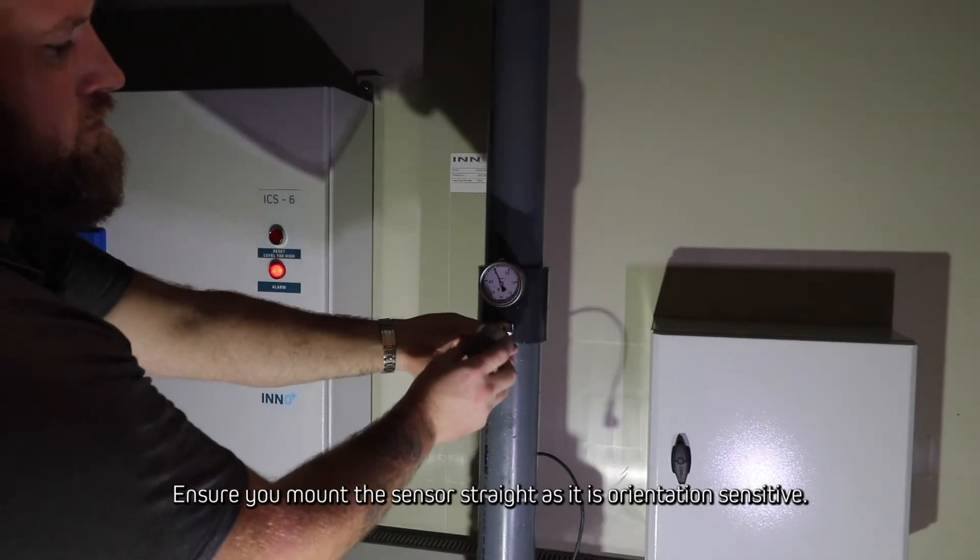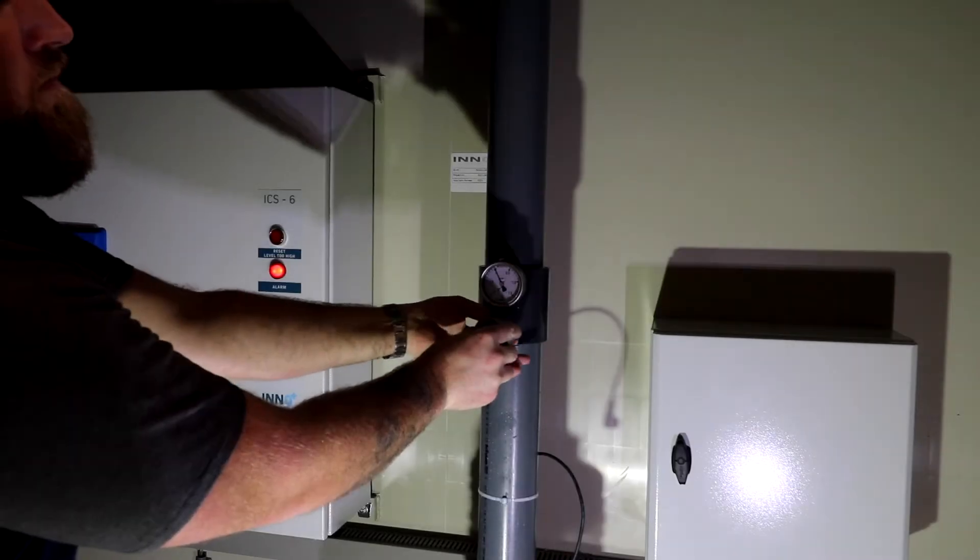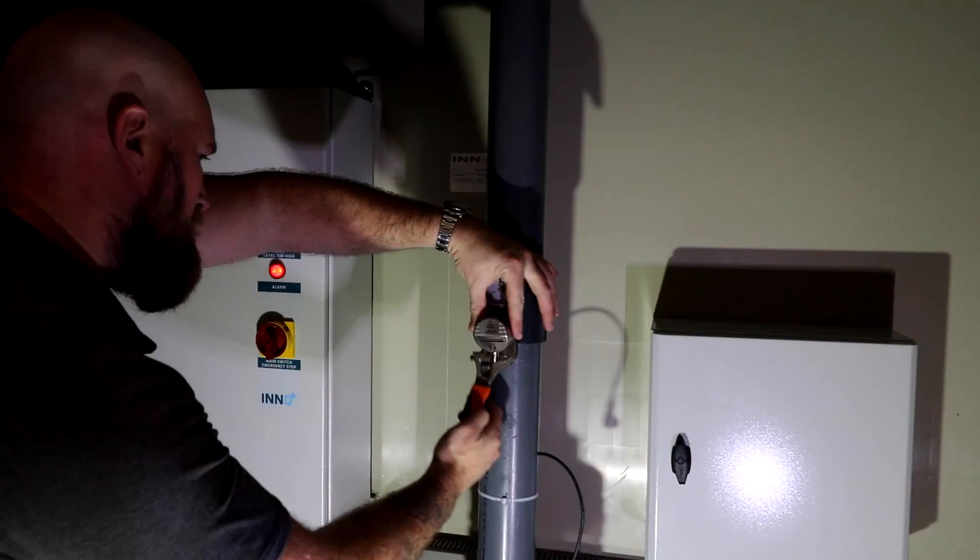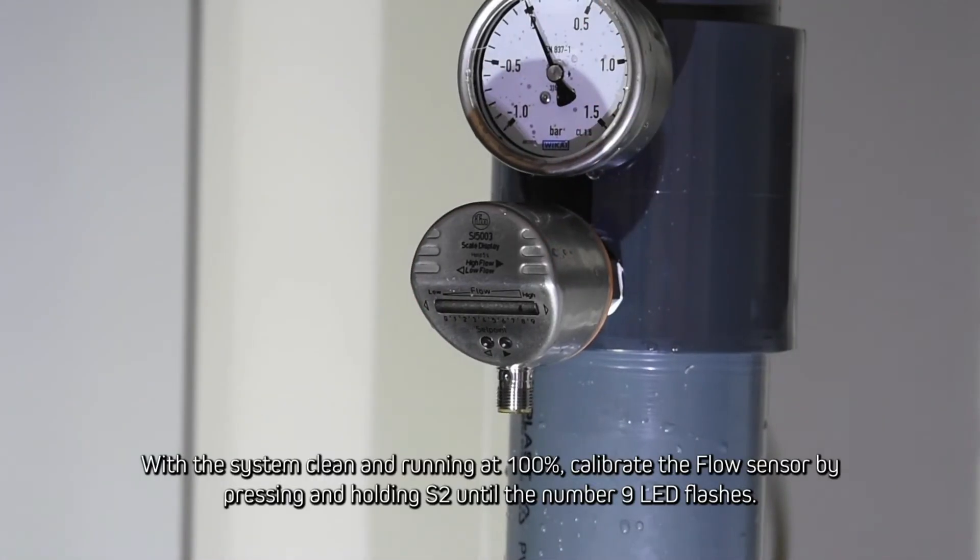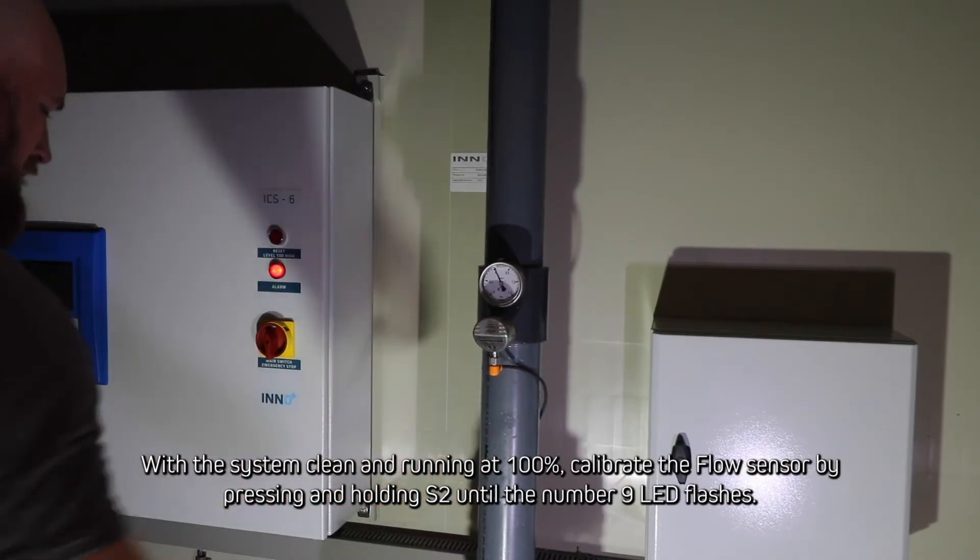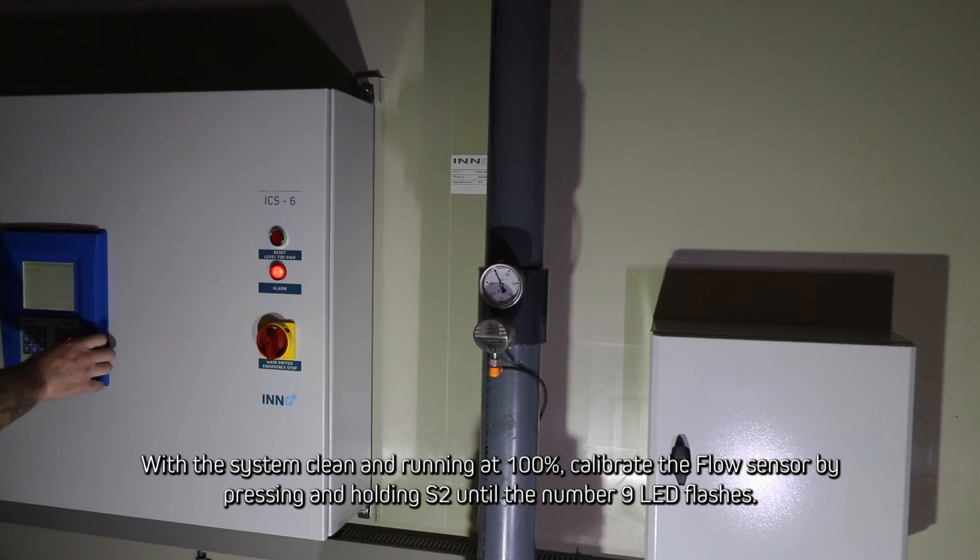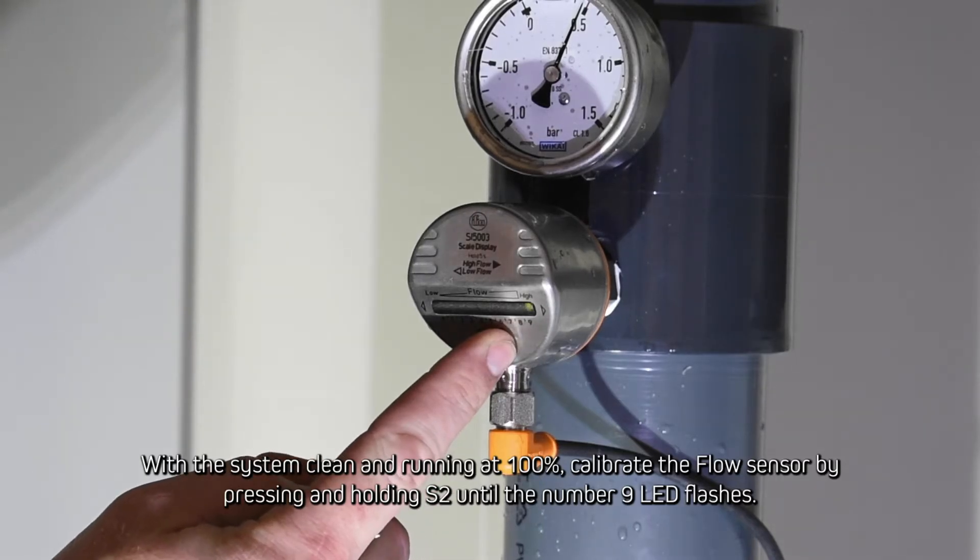Ensure you mount the sensor straight as it is orientation sensitive. With the system clean and running at 100%, calibrate the flow sensor by pressing and holding S2 until the number 9 LED flashes.